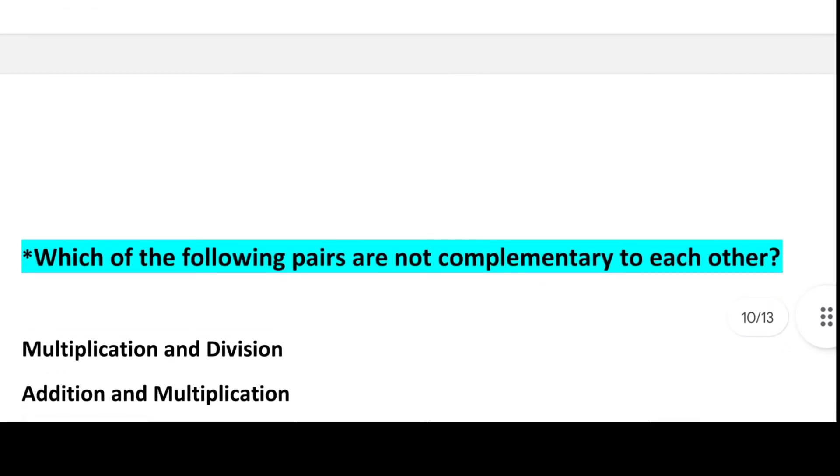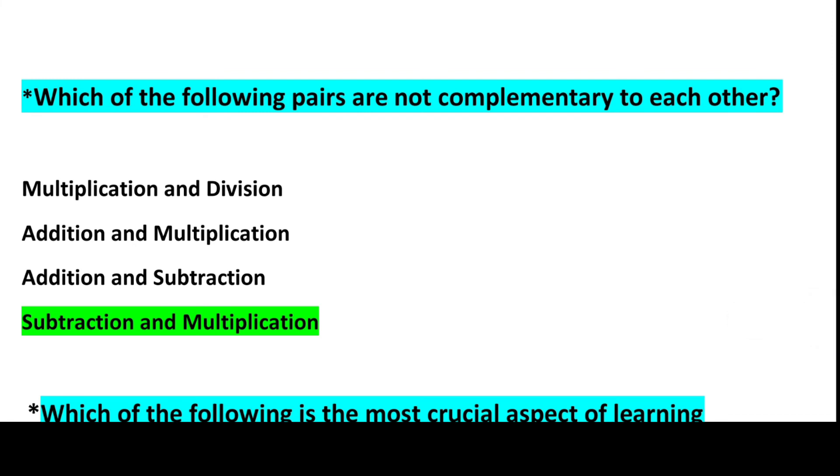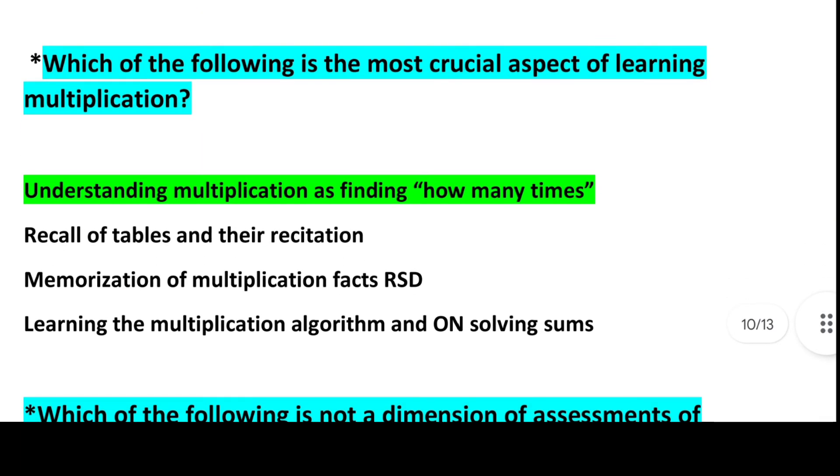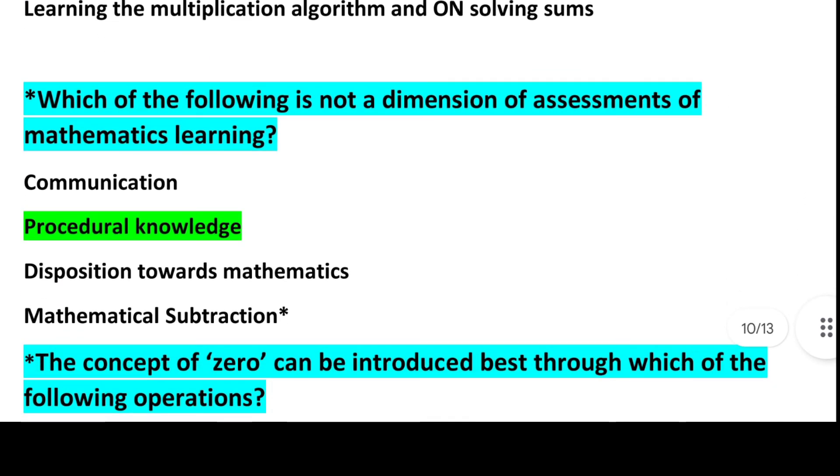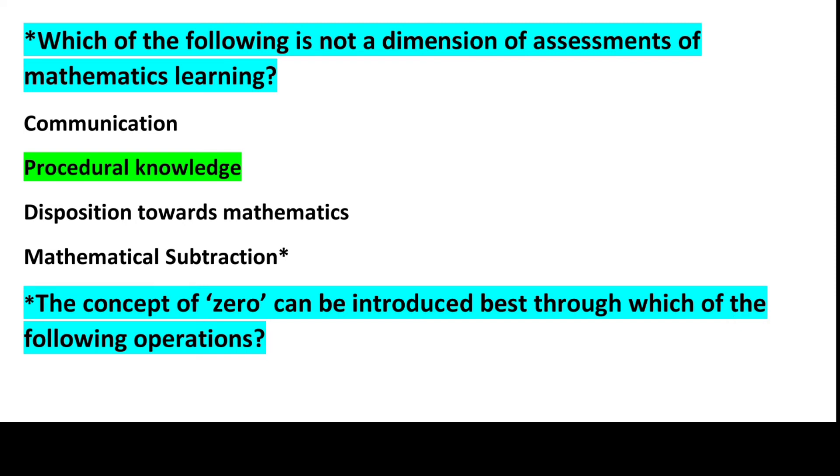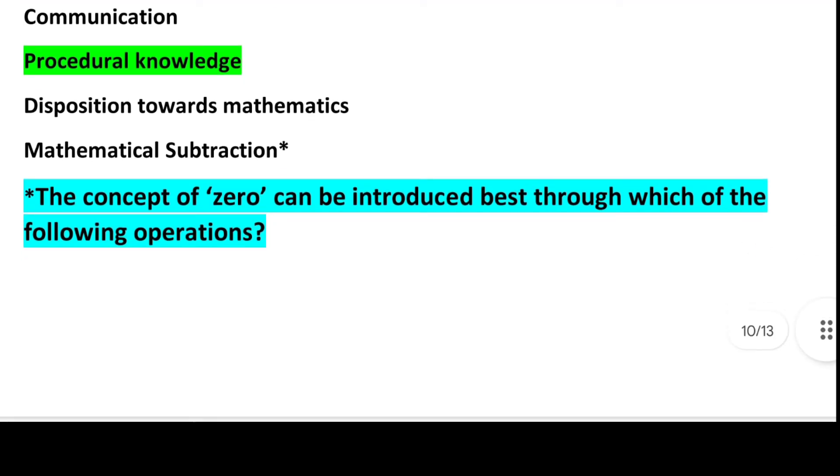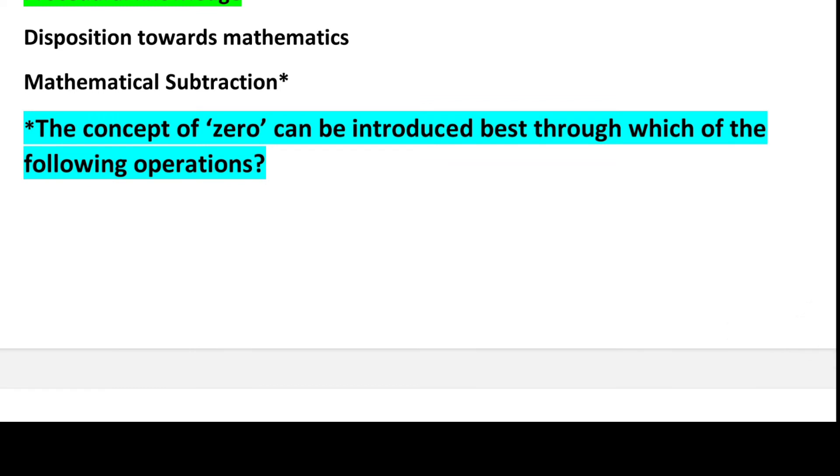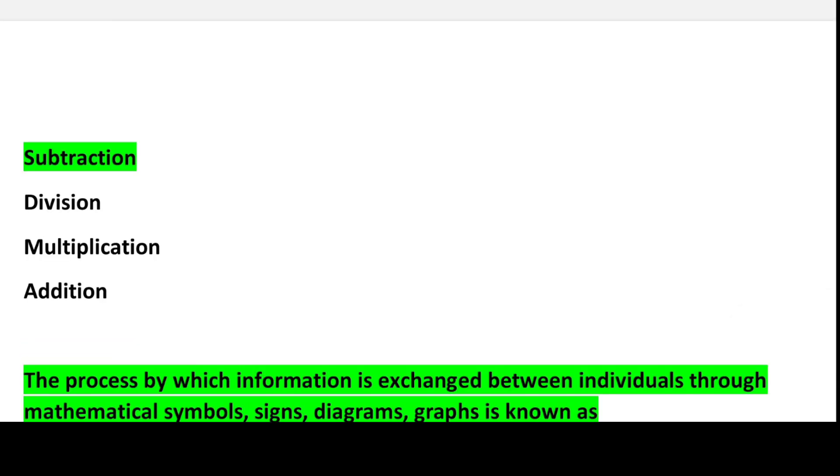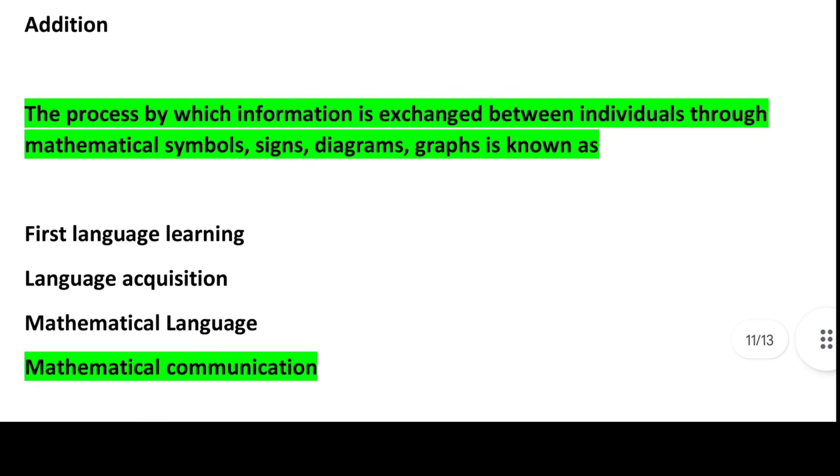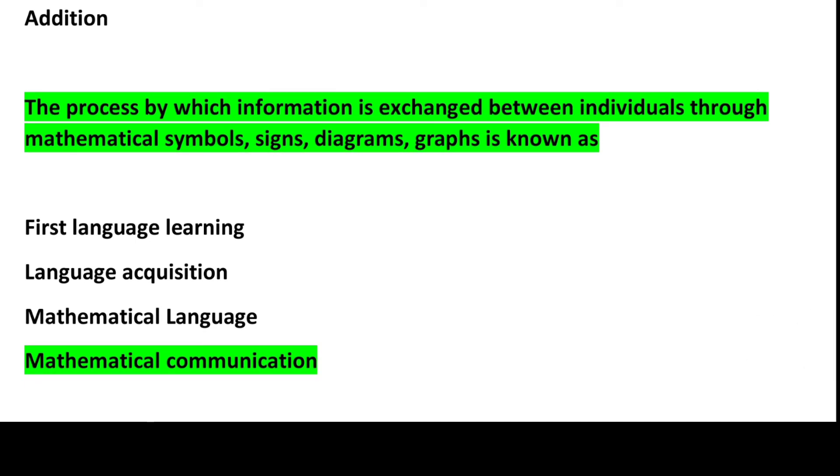Next question: Which of the following pairs are not complementary to each other? Answer is Option 4, Subtraction and multiplication. Next: Which of the following is the most crucial aspect of learning multiplication? Answer is Option 1, Understanding multiplication as finding how many times. Next: Which of the following is not a dimension of assessment of mathematics learning? Answer is Option 2, Procedural knowledge. Next: The concept of zero can be introduced best through which of the following operations? Answer is Option 1, Subtraction.